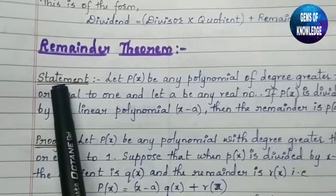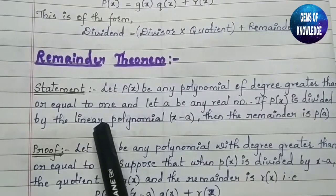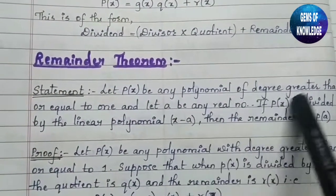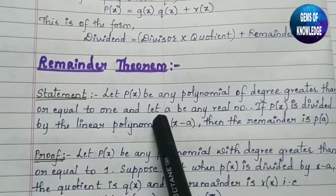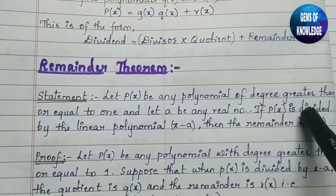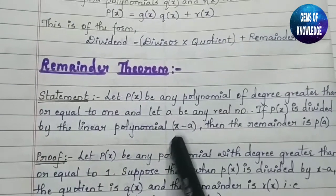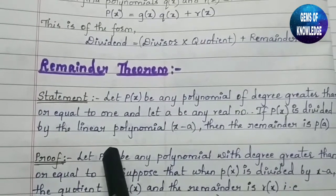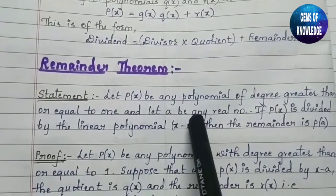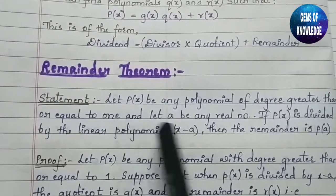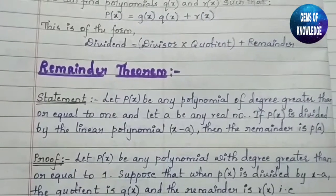The statement of the Remainder Theorem: Let p(x) be any polynomial of degree greater than or equal to 1, and let a be any real number. If p(x) is divided by the linear polynomial (x − a) — linear meaning its degree is 1, since x has power 1 — then the remainder is p(a). This is the statement we need to prove.